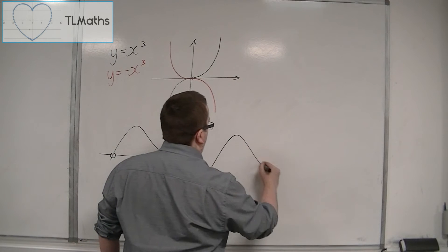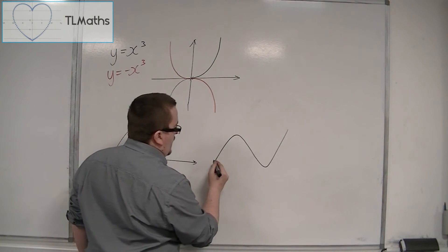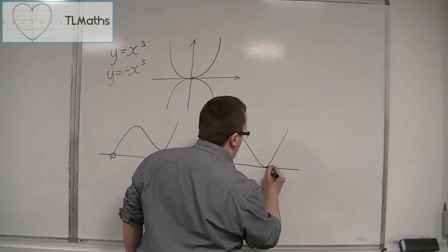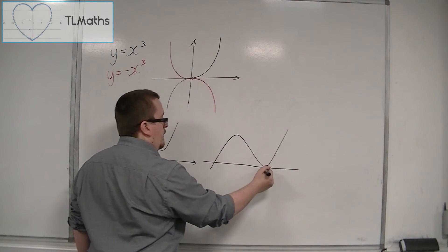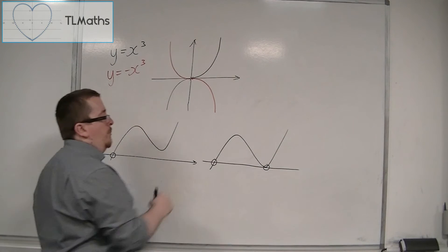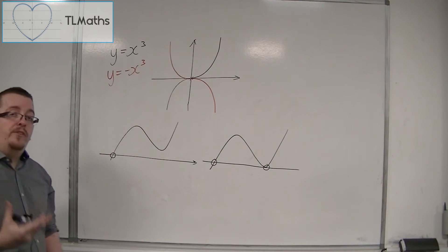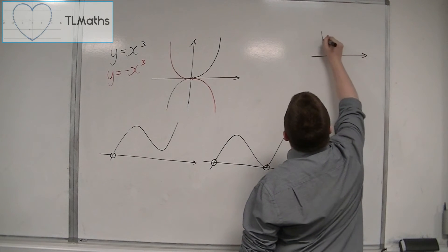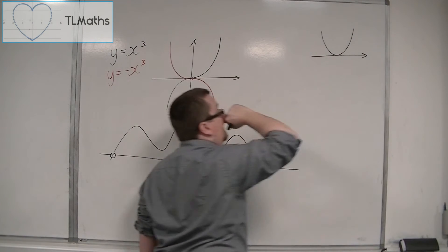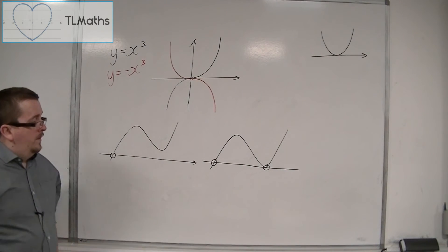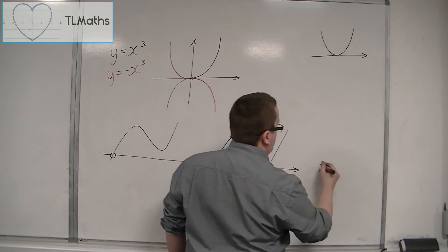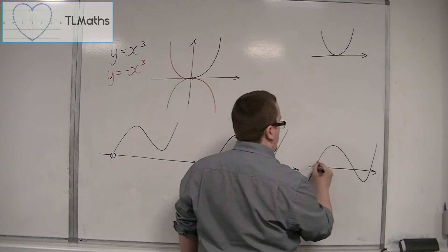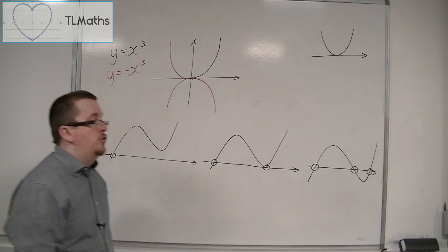But if I draw it again, we could have the x-axis here. So the curve is just brushing the x-axis at that point, much like we would have seen for a parabola when the parabola just brushes the x-axis.